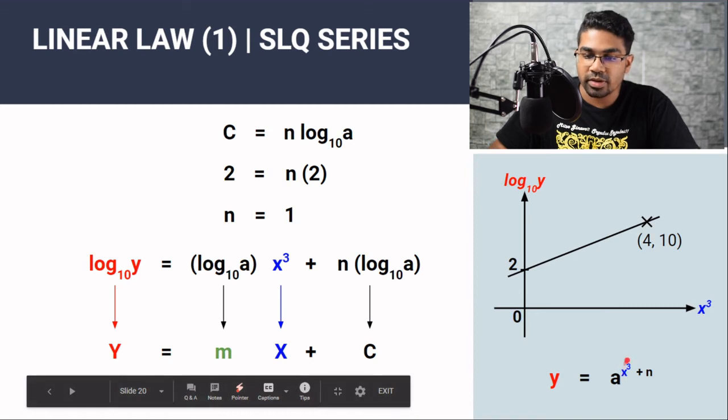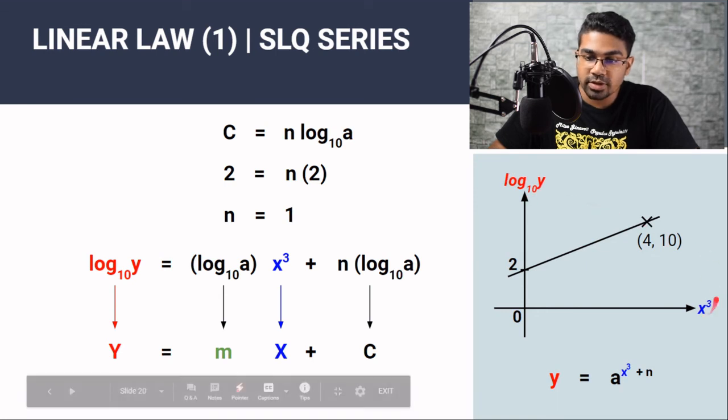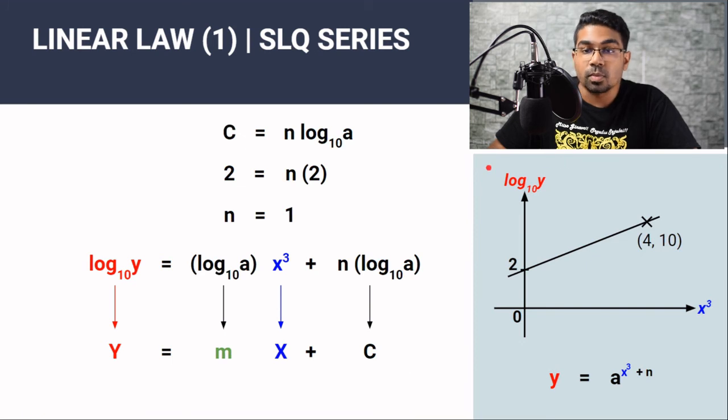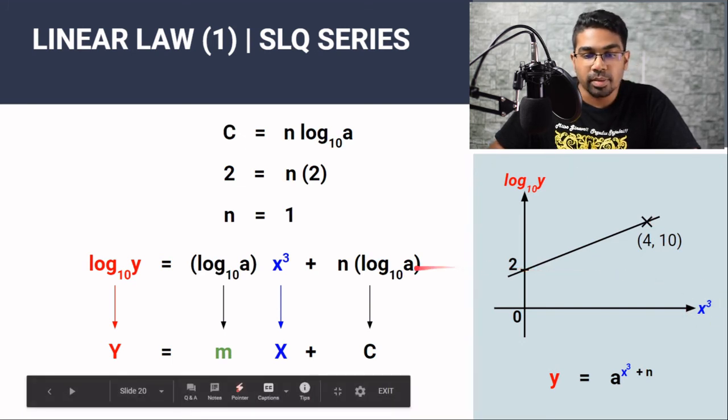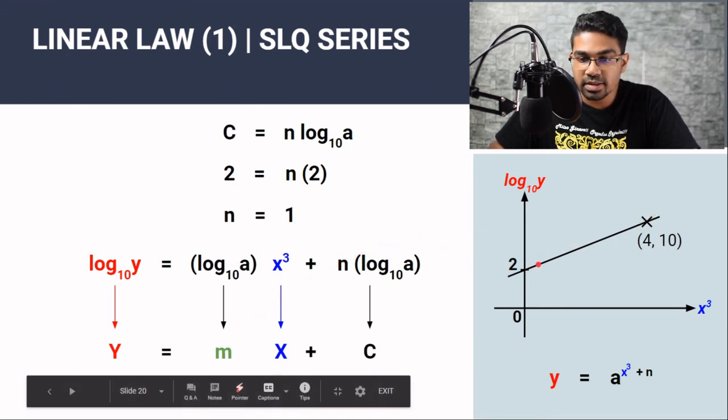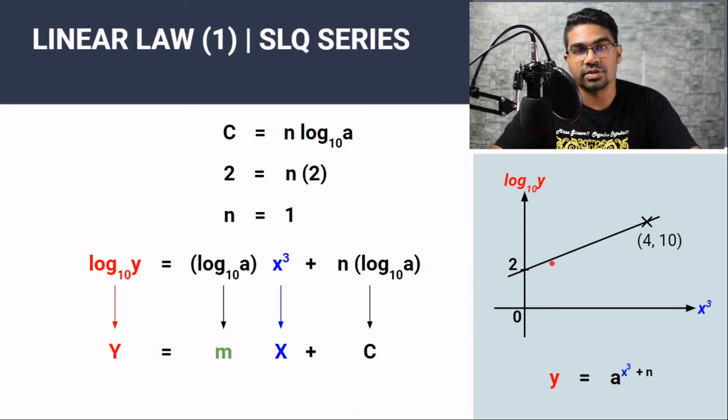So we started out with this relation here, y equals a to the power of x³ plus n. But the graph was given to us with log₁₀y and x³ having a linear relation. So our job is to convert this non-linear relation to a linear relation such that log₁₀y is the capital Y and x³ is the capital X. And by making comparisons and finding the actual values of the gradients as well as the y-intercept, we can find the value of the constants.